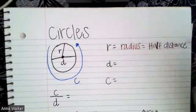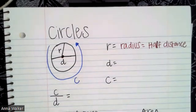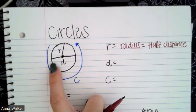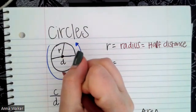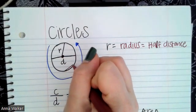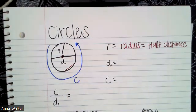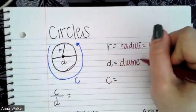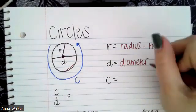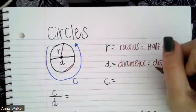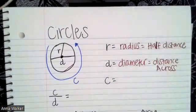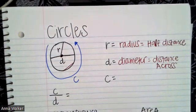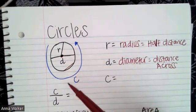D is the full distance across from edge to edge through the center. It's important to note that this line goes through the center of the circle. If I drew a line from this edge to this edge down here, that is not the same measurement as d, which stands for diameter. The diameter is the distance across the circle through the center.